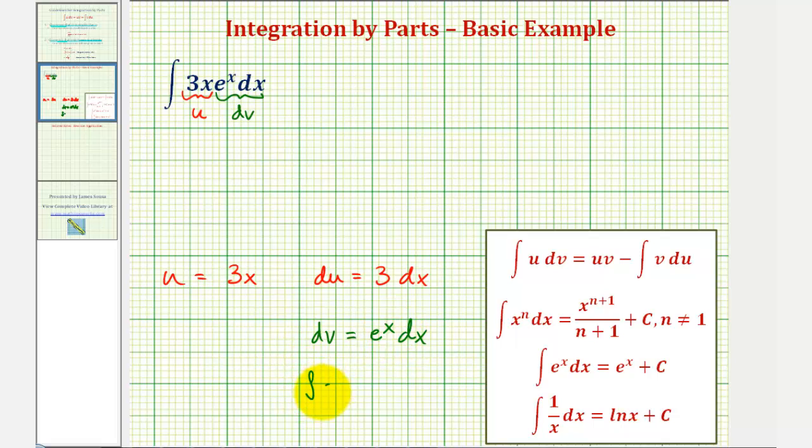The integral of dv, or one dv, equals the integral of e to the x dx. We can think of this as one dv. The integral of one with respect to v would just be v. The integral of e to the x with respect to x is just e to the x. And we'll leave the plus c for later. So now we know that v equals e to the x.